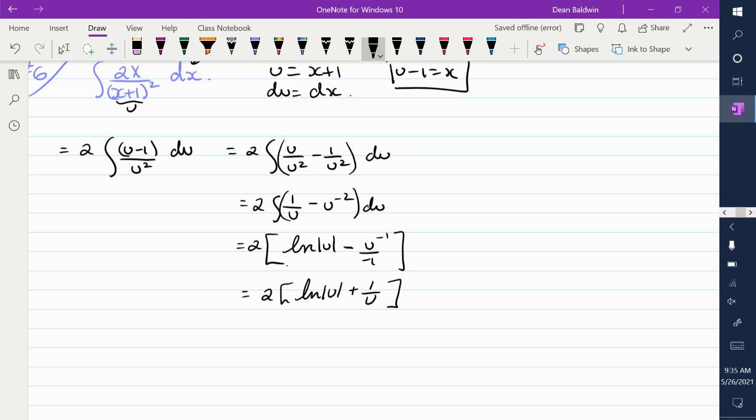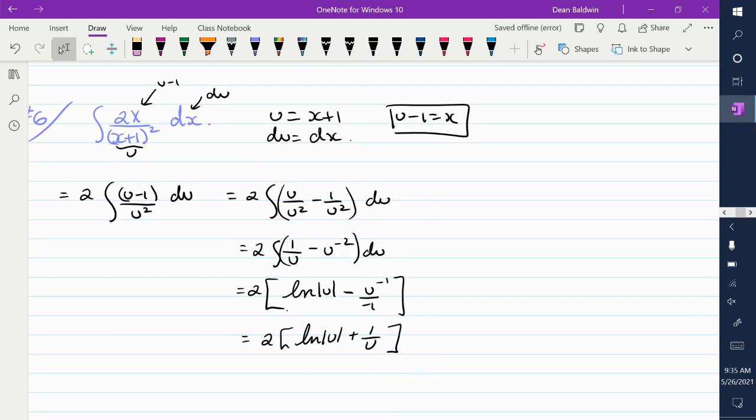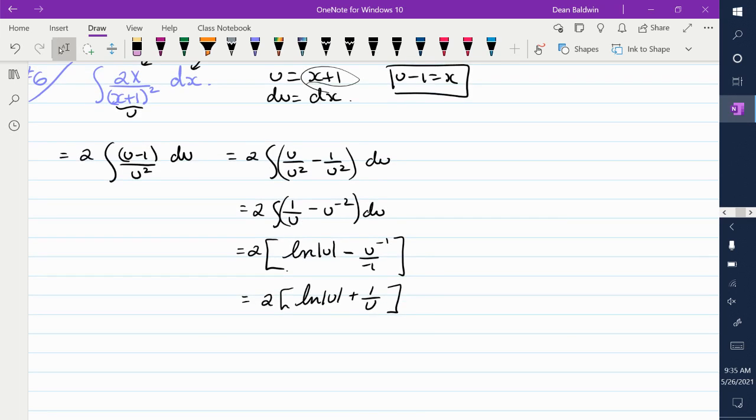And then, final step is to replace the u with x plus 1. So it's 2 times the natural log of x plus 1 plus 1 over x plus 1. What do I have to add on to it? Plus c.